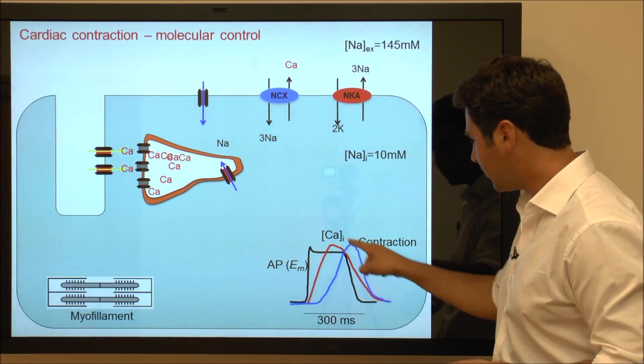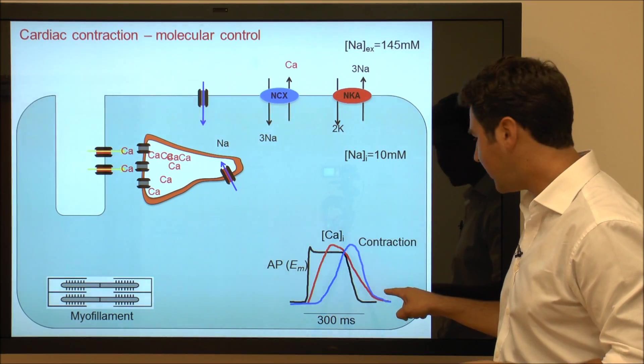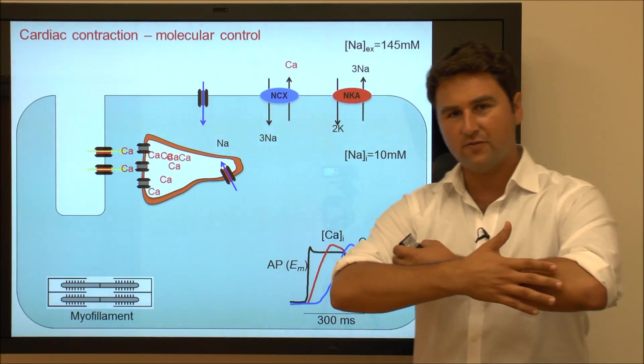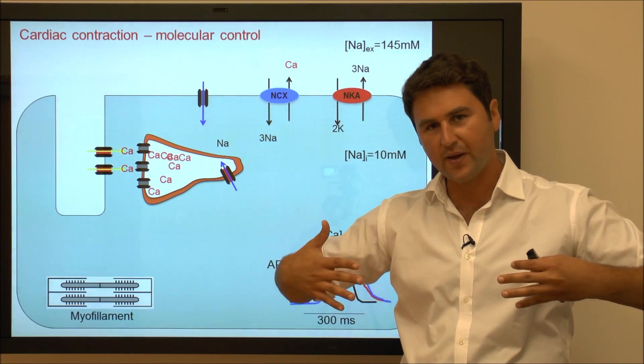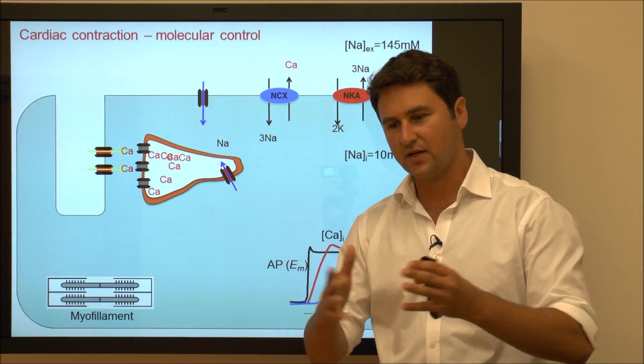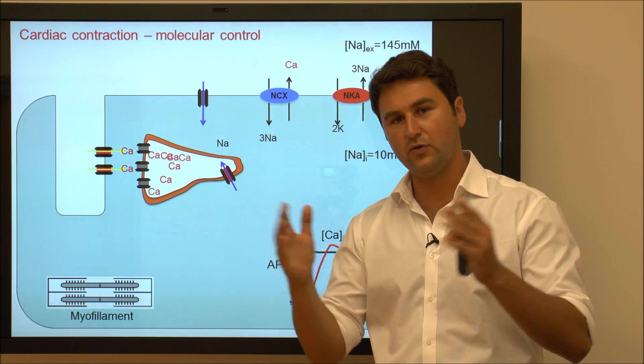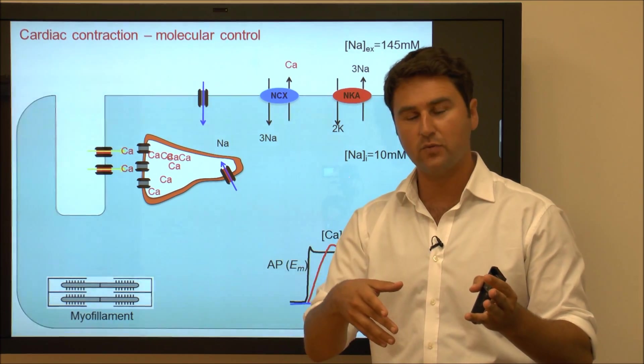As our calcium levels come down, the myofilaments can now slide back over each other and the cardiac myocyte relaxes, and therefore the heart relaxes and can be filled again with blood.